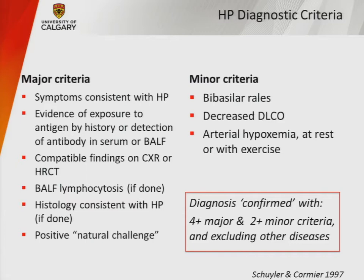In 1997, diagnostic criteria were proposed with major criteria: symptoms, exposure history, compatible radiographic findings, lymphocytosis on BAL if done, consistent histology if done, and a positive natural challenge. Minor criteria included crackles, decreased DLCO, and arterial hypoxemia either resting or exertional. The diagnosis was confirmed if you had four or more major and two or more minor criteria, with other diseases excluded.